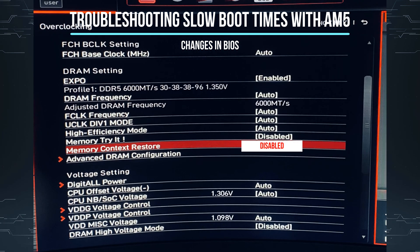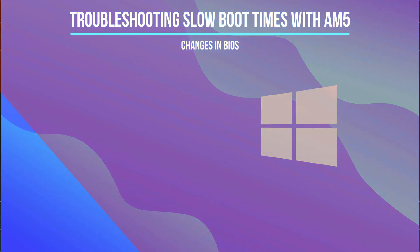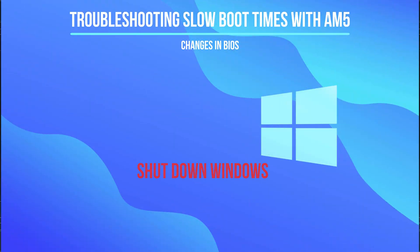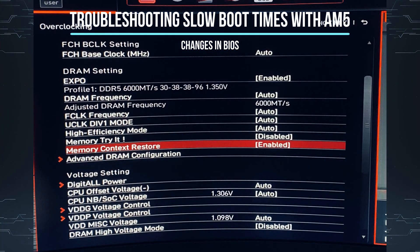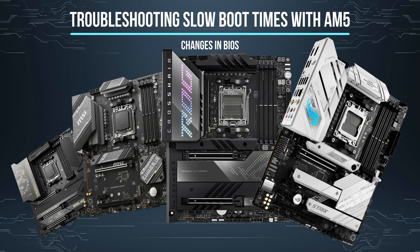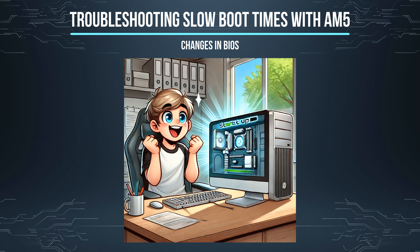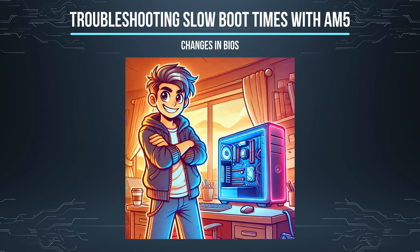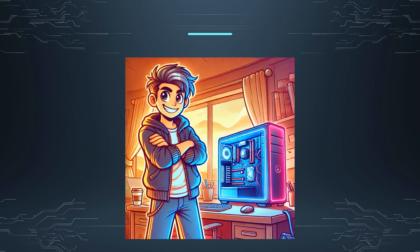Here's what I did to fix it. Ensure your BIOS is up to date. In the BIOS, look for Memory Context Restore and disable it. Restart your computer into Windows, then shut it down. Turn the computer back on, go back into BIOS, and enable Memory Context Restore again. Depending on your motherboard you might be able to leave this setting disabled, but I re-enabled it on mine. Now when I restart my computer the orange light is gone — there was only one white light at the beginning and the problem was fixed.